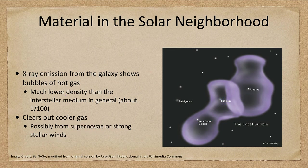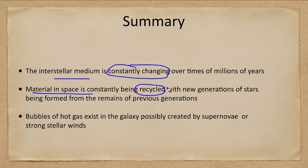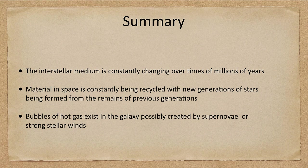To summarize: the interstellar medium is constantly changing. Material in space is being recycled, giving rise to new generations of stars formed from the remains of previous generations. We also saw that bubbles of hot gas exist in the galaxy, possibly created by supernovae or strong stellar winds. That concludes this lecture on the cycle of cosmic material.